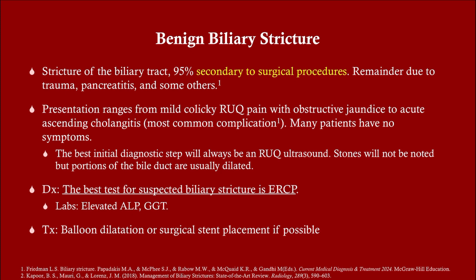These are patients that may have gotten an ERCP in the past or had some sort of surgery on the bile ducts — look for that in the history if you get this on an exam. The presentation ranges: most patients have no symptoms, but if they do it's likely going to be an obstructive jaundice picture, or they can develop acute ascending cholangitis. The best initial diagnostic step is a right upper quadrant ultrasound, and what you would see is a stricture — however it can be difficult to diagnose, so you would then do an ERCP.